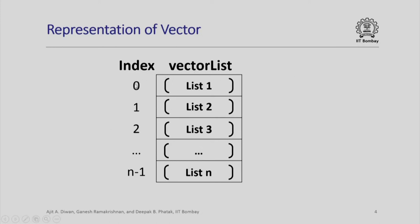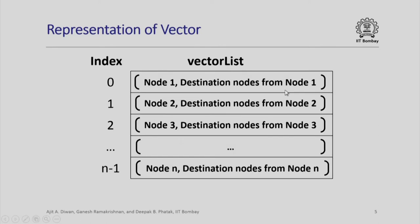There is an index 0, 1, 2, 3, 4 up to n minus 1, assuming there are n nodes in the graph. For each node there will be an associated list. List 1 will be associated with index 0, list 2 will be associated with index 1, and so on. All n lists are associated like this.